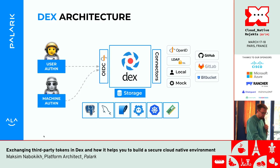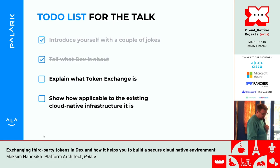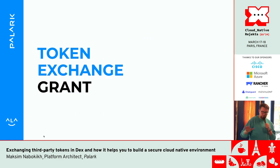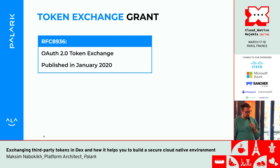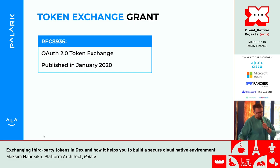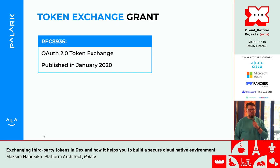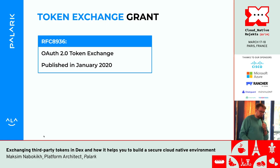Moving to the next step: explaining what token exchange is. The token exchange grant is the main reason this talk is happening today. There is a special RFC — RFC 8693. I will explain the whole RFC today. This is the extension for OAuth 2.0 that defines the token exchange grant, an additional way to get tokens from DEX. This is not a new thing — it was published in 2020 — but in DEX it was implemented not so long ago, like last year.